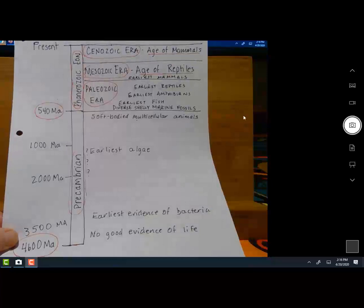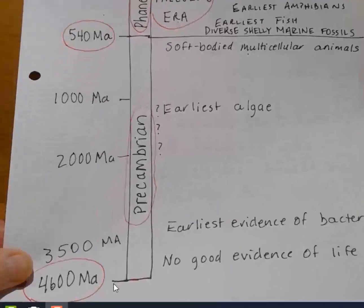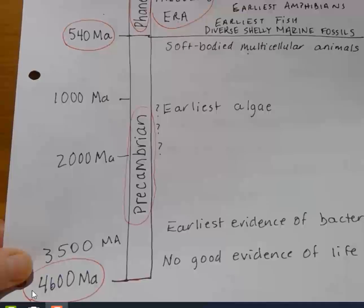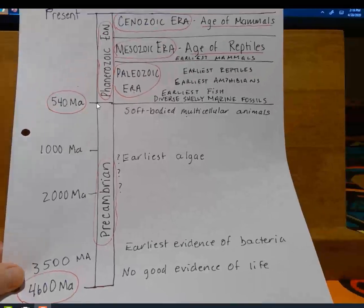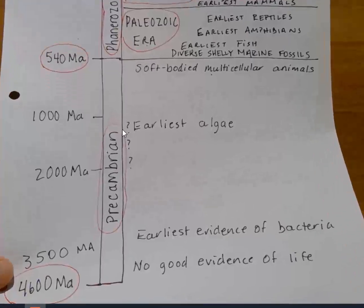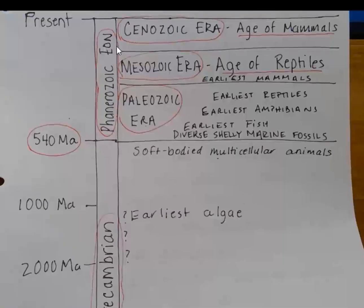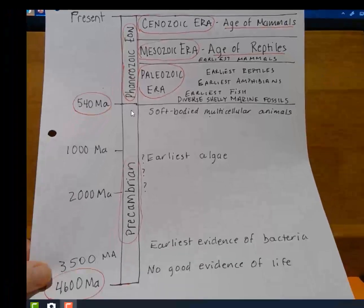Here I've sketched out the geologic time scale. What it does is take all of earth history from the present day to when earth first formed 4.6 billion years ago — or 4,600 million years ago — and split it up into different subintervals of time. The hugest chunk is down here in the Precambrian, which encompasses all the time from 4,600 million years ago to 540 million years ago. The more recent part is called the Phanerozoic eon, which goes from 540 million years ago to the present. Why was this dividing line chosen?